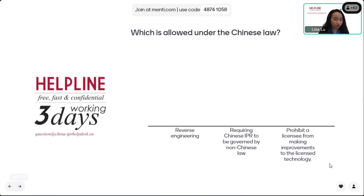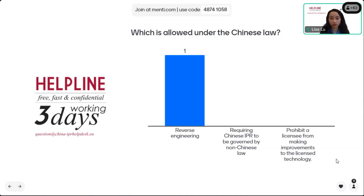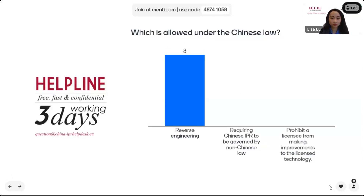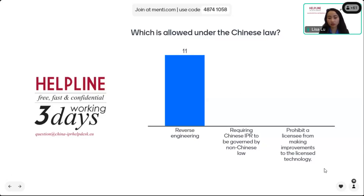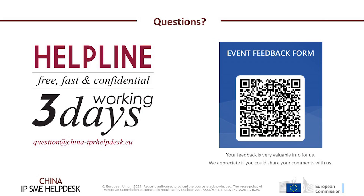Last question: which is allowed under Chinese law? Reverse engineering? Or using non-Chinese law to regulate Chinese IPR? Or prohibiting a licensee from making improvements to your technology? All participants chose the correct answer: reverse engineering is allowed under Chinese law. Keep in mind that for Chinese IPR, because intellectual property is a territorial right, you must use Chinese law to regulate it. And you cannot prohibit your licensee in China from making any improvements to the licensed technology.